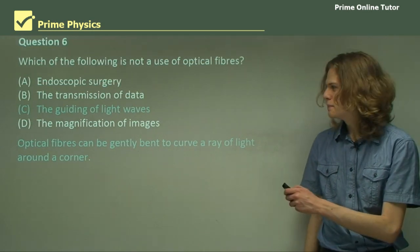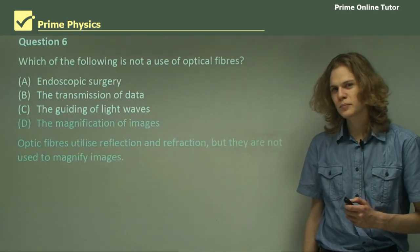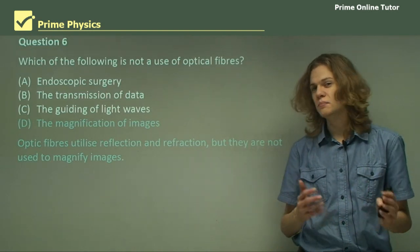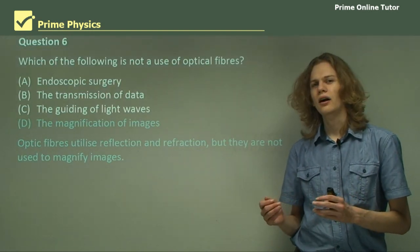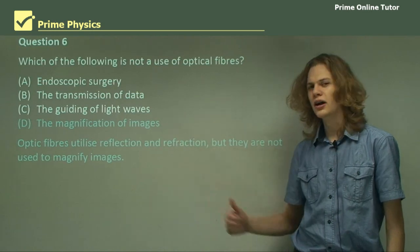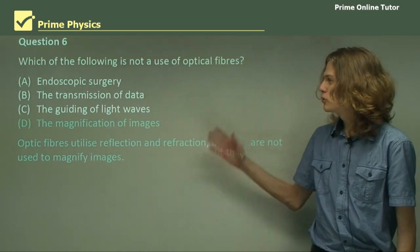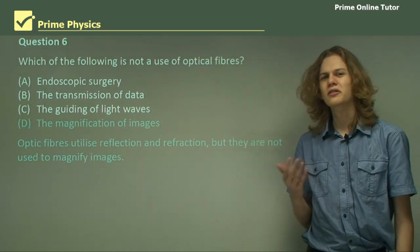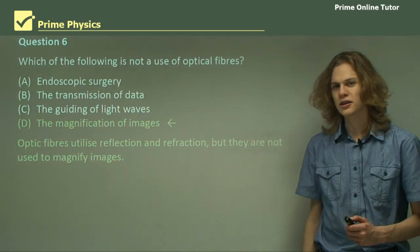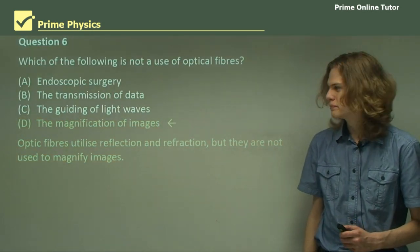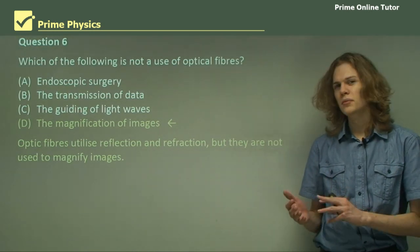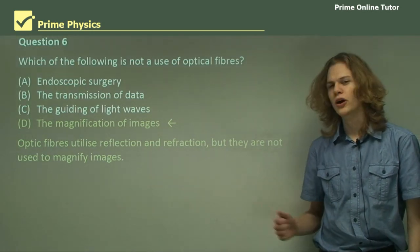Our last option then is D, the magnification of images. Now, remember that when we covered lenses and mirrors, we found forms of each that could be used to magnify an image. Optical fibers, however, aren't used for this purpose. And so D is the correct answer. Images are magnified by lenses or by mirrors, not by optical fibers.